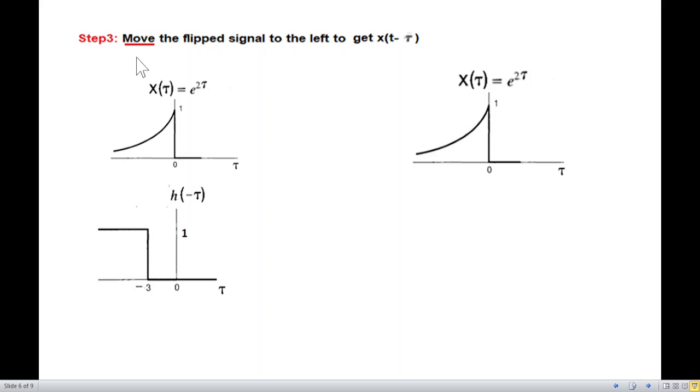Now in the third step, move the flip signal to the left to get h(t minus tau). So we move this signal towards further left to a point t. So we move this to a point t. This probably is t where our variable minus tau minus 3 will now become t minus 3. So the simple way is that you would just add t everywhere. So add t here, add t here. So this is the signal moved to a point t.